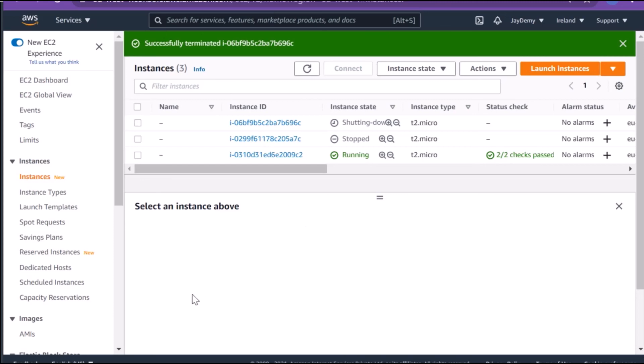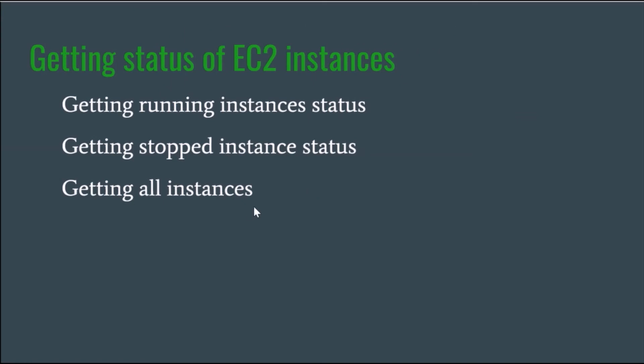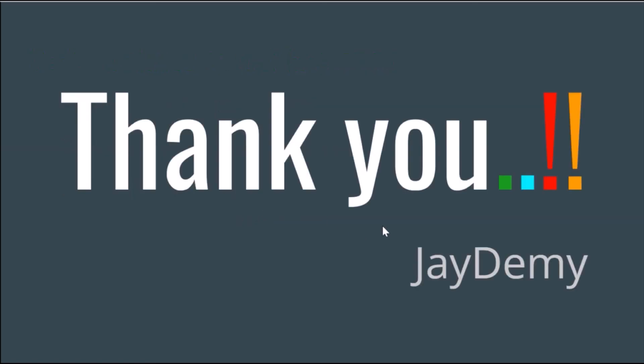This is how to use a Lambda function to get the status of EC2 instances. Going forward, we will see how to create an instance, how to stop an EC2 instance, and how to terminate an EC2 instance. Thank you!